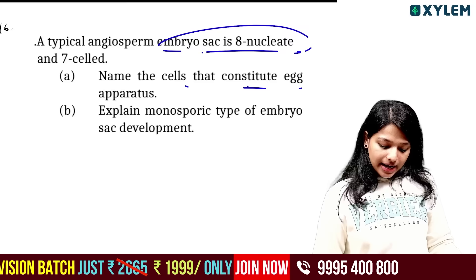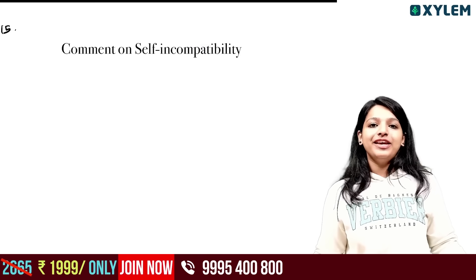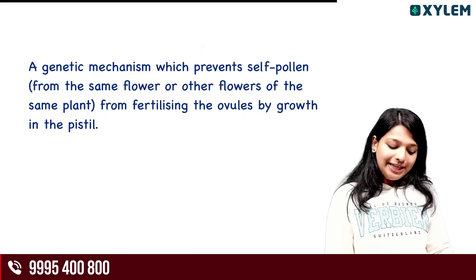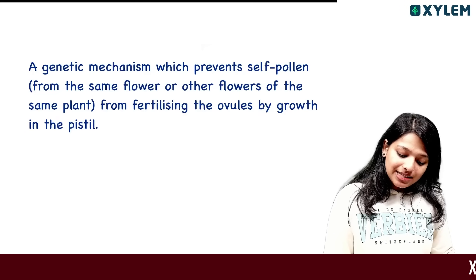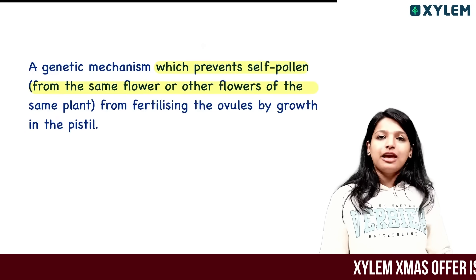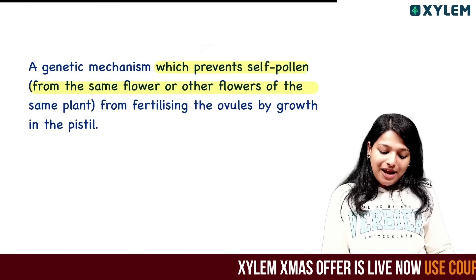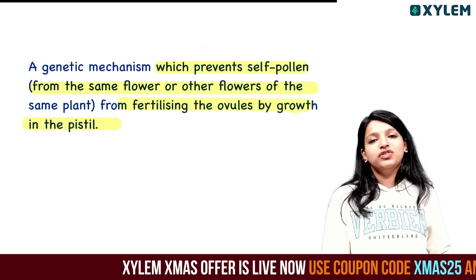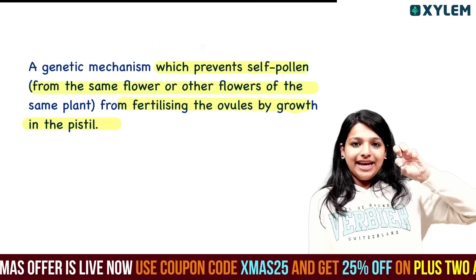What is self-incompatibility? It is a genetic mechanism which prevents pollen from the same flower or other flowers of the same plant from fertilizing the ovule by inhibiting pollen tube growth.